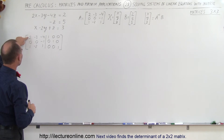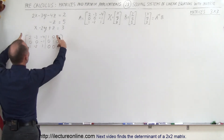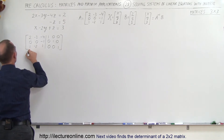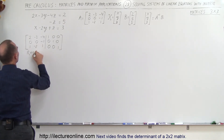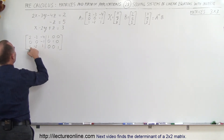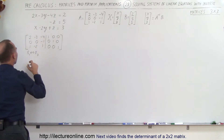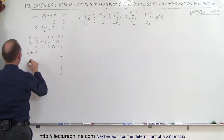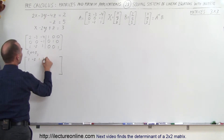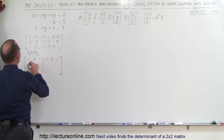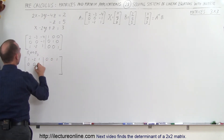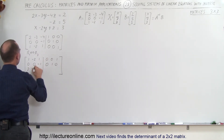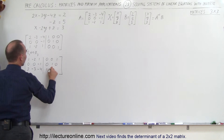First of all, we need a 1 in the corner, so we're going to exchange row 1 and row 3 so that we get that 1 up there. The matrix will now look like this: row 1 is 1, -2, 1, 0, 0, 1. The middle row stays the same. And the bottom row is now 2, -3, -4, 1, 0, 0.